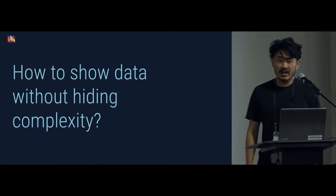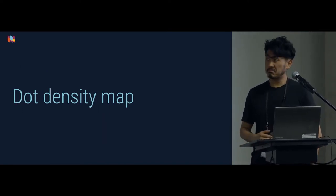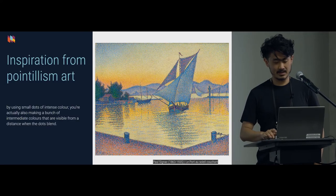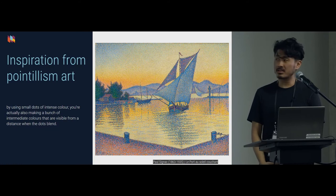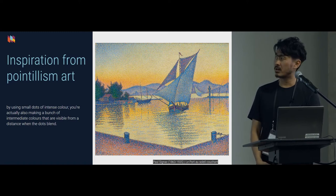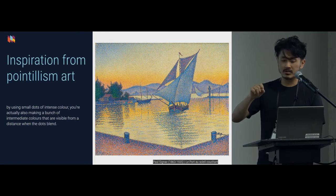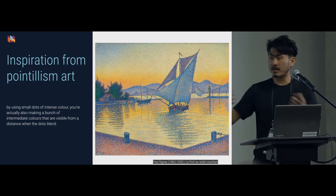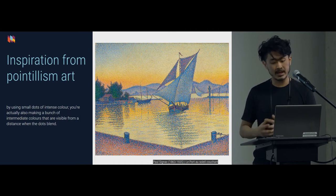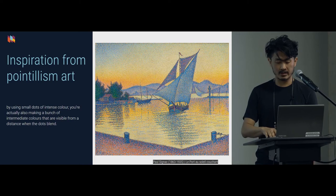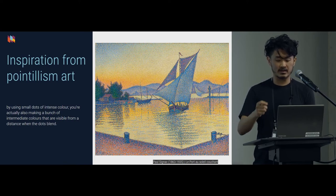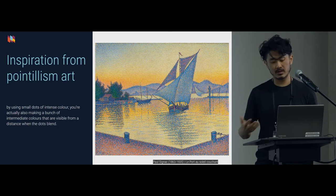So how do you show data without hiding the complexity? Dot density maps — the topic of this talk — is the answer. Artists have done it through pointillism: applying tiny dots and strokes on a canvas that, when you step back, become shapes as different dots and strokes blend into colors. It's a useful technique that enables viewers to look at individual dots when zooming in, while stepping back gives you the bigger picture.